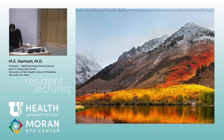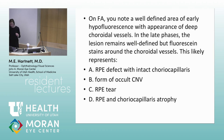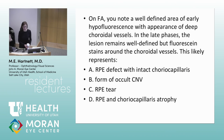Quiz question: On fluorescein angiography, you note a well-defined area of early hypofluorescence with appearance of deep choroidal vessels, and in late phases the lesion remains well-defined without leaking — fluorescein stains around the choroidal vessels. The answer is D: RPE and choriocapillaris atrophy. The RPE melanin is lost, but you also aren't seeing bright choriocapillaris, so both are lost — yet you still see the choroidal vessels below.